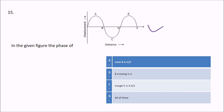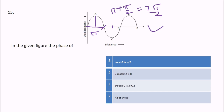This is the figure. You have to identify whether crest A is at π/2, and B is the crossing at π, and trough C is at 3π/2. Since π + π/2 equals 3π/2, the answer is D — all of these.